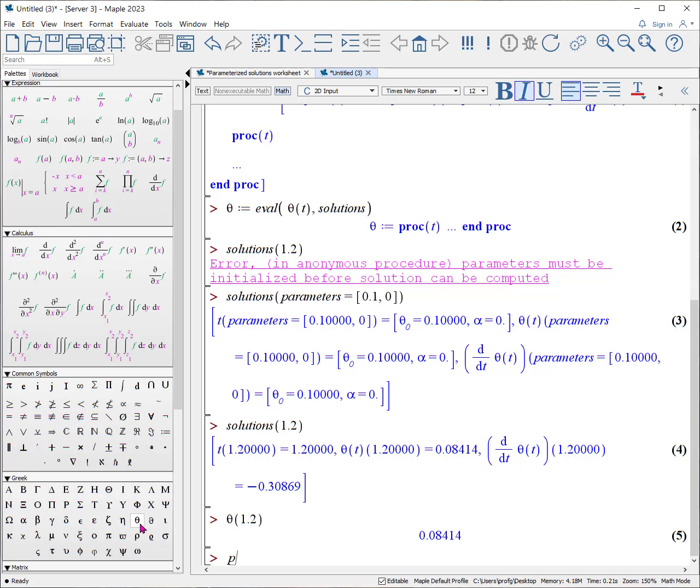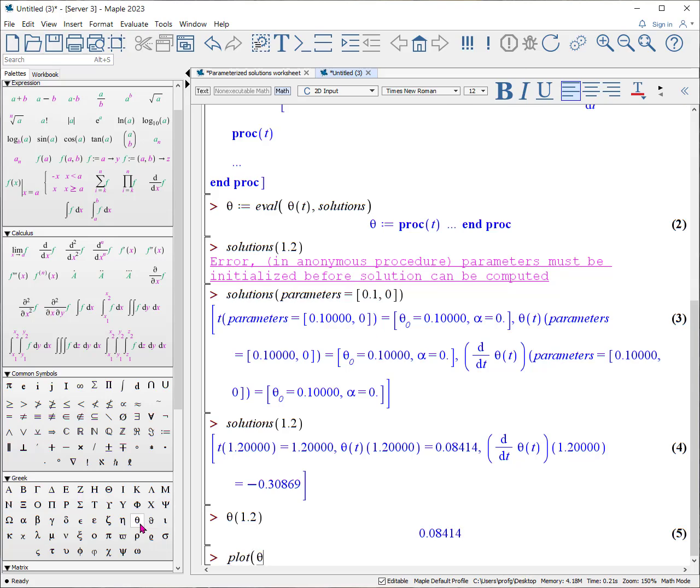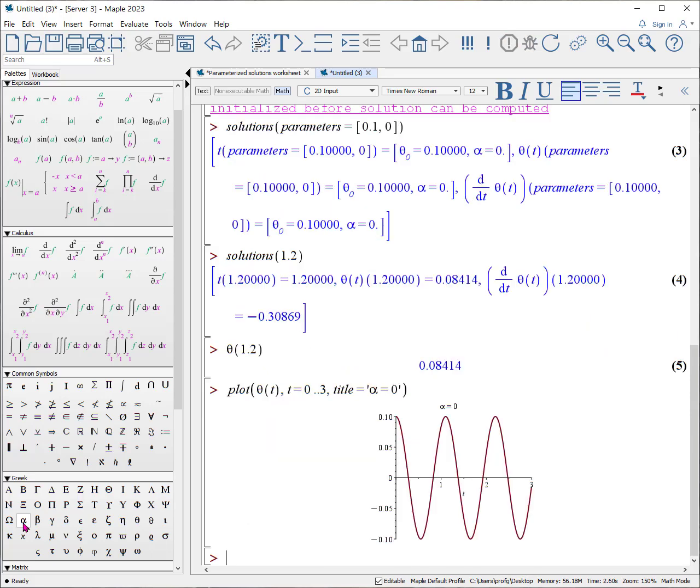Now we're off to the races and we can plot θ as a function of t from t equals zero to say three, and in this particular case we are doing a situation for which the title is 'α is equal to zero', and there we go. That is our plot, and there it's showing that α is not changed, and not surprisingly, if there's no air resistance, therefore it just swings back and forth.